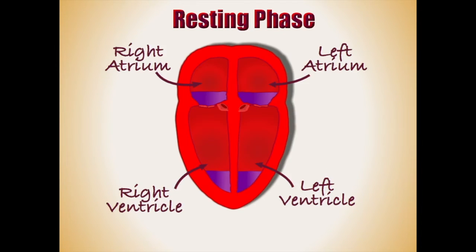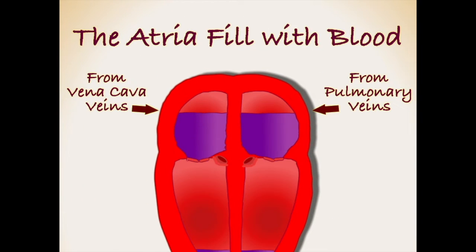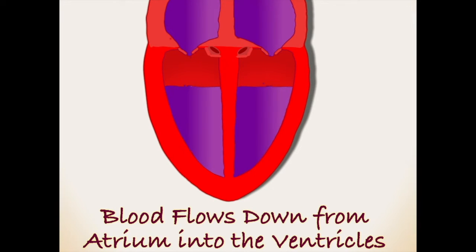During the resting phase, blood first flows into the two top chambers of the heart, the left and right atrium. From there it flows down through valves into the larger bottom chambers, the left and right ventricle, allowing them to also fill with blood.